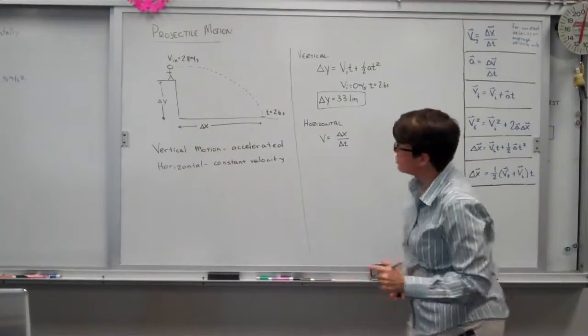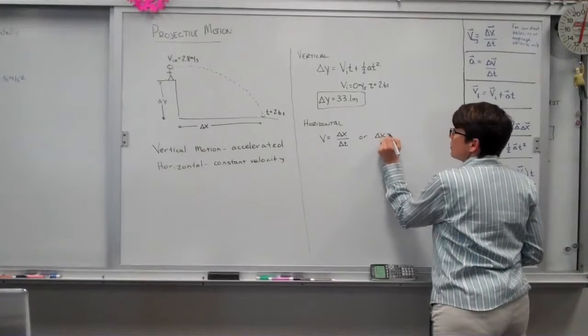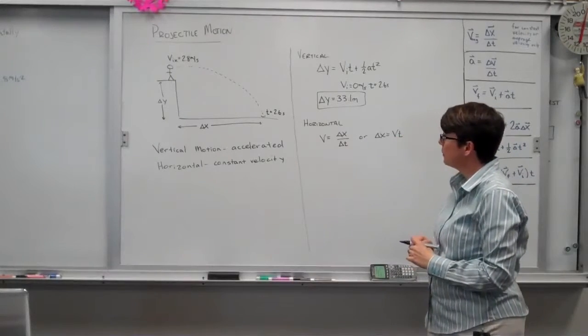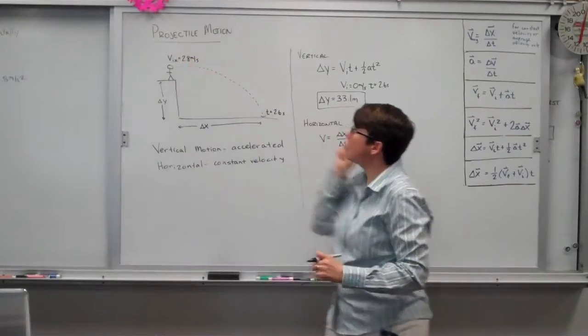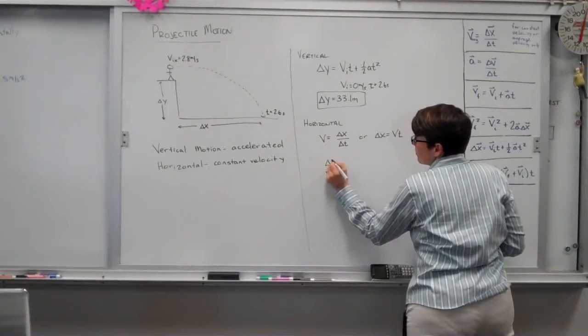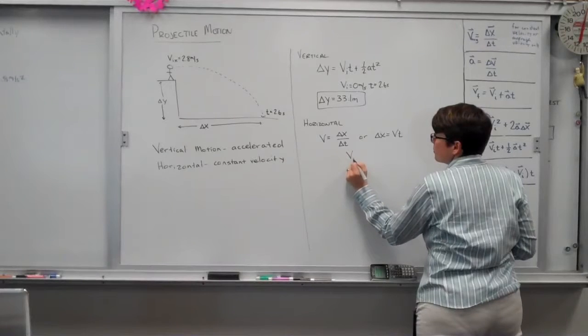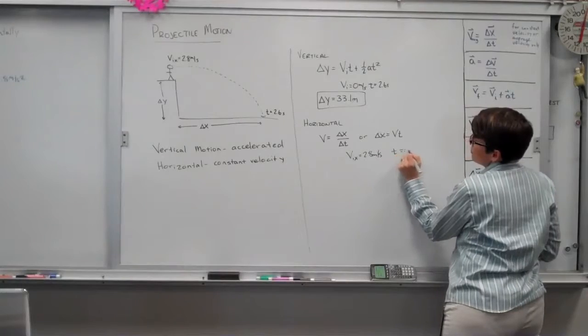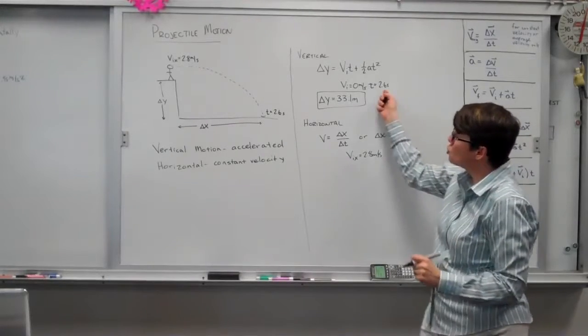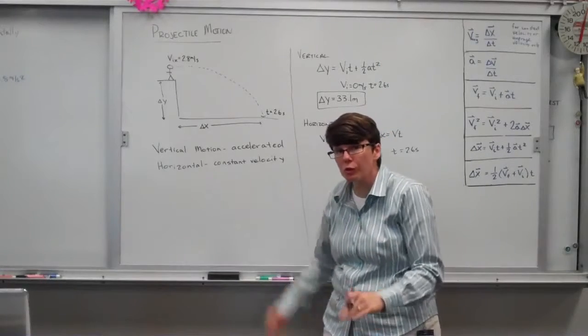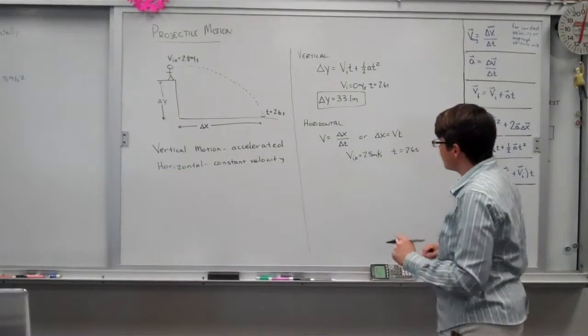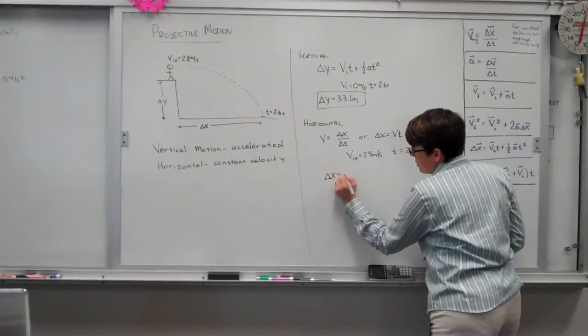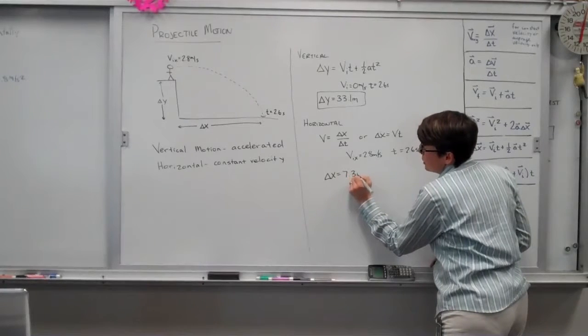Stated differently, if I want to know delta x, velocity times time. My initial velocity is horizontal, 2.8 meters per second. Time given as 2.6 seconds to accomplish both the vertical and horizontal motion. The result there gives you a position change of 7.3 meters.